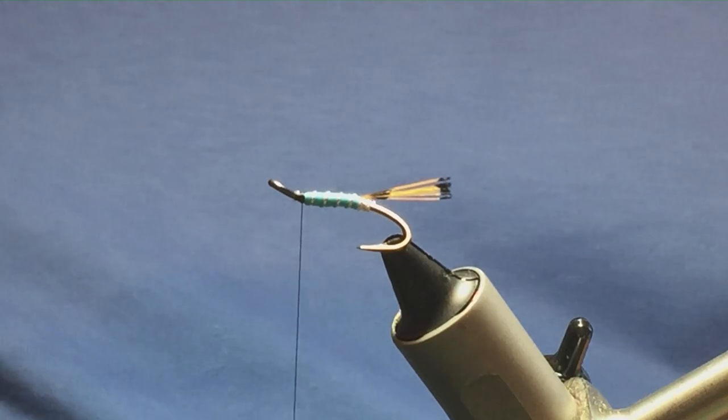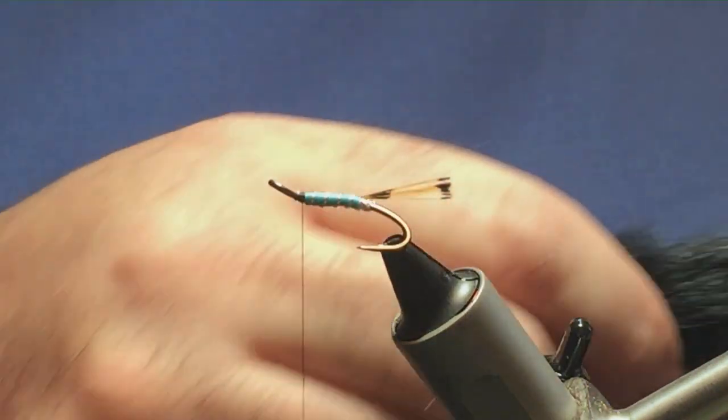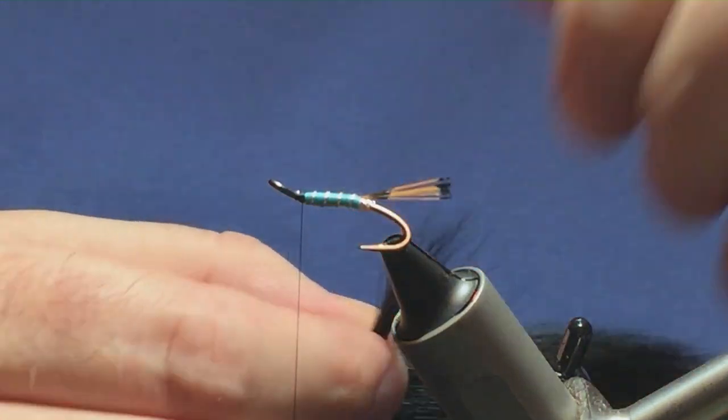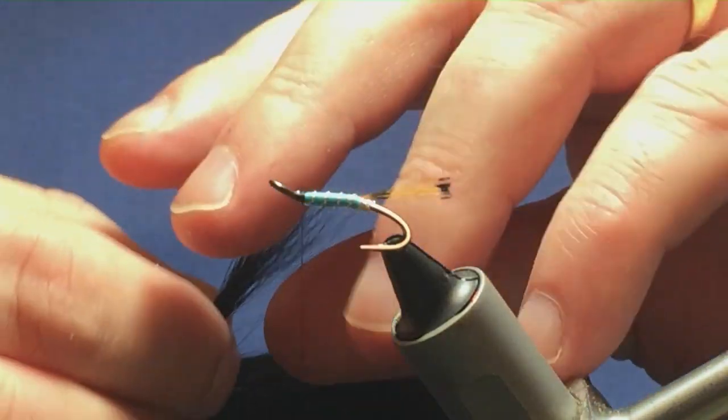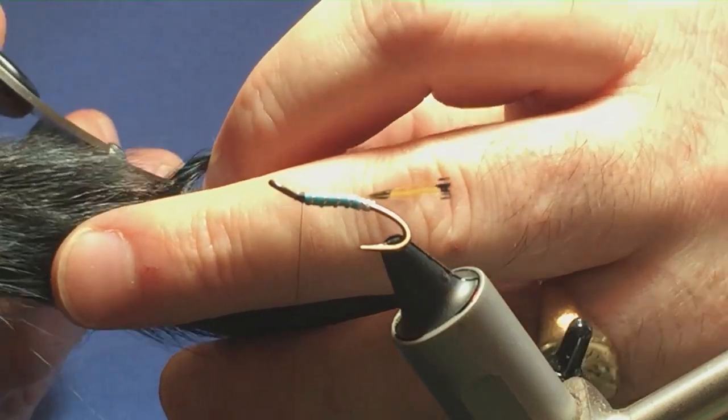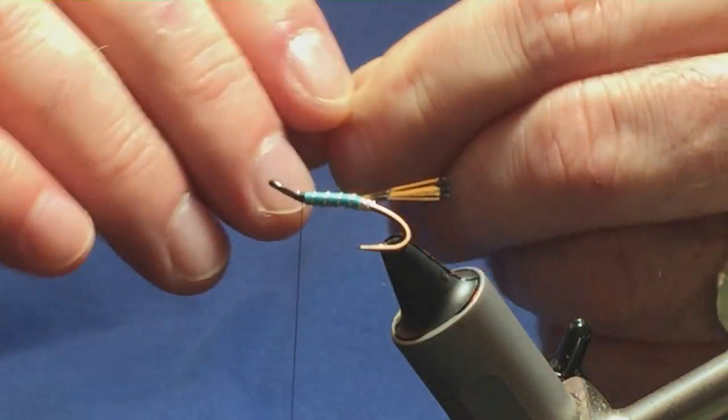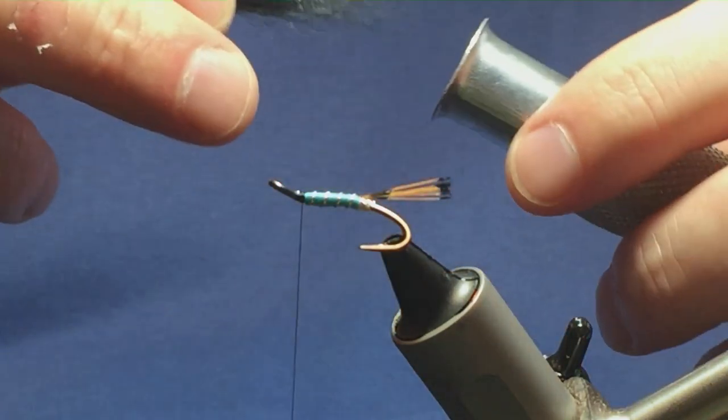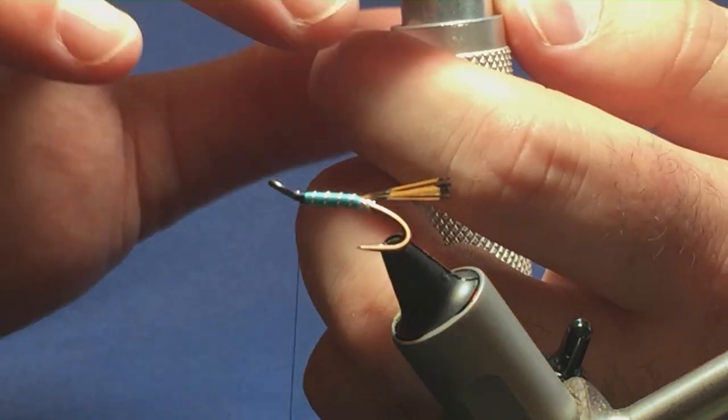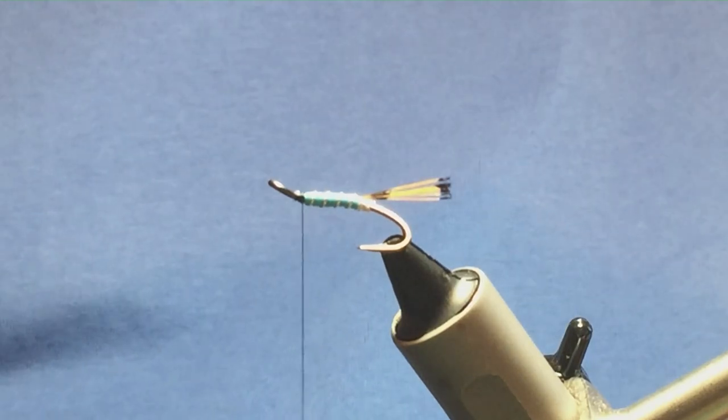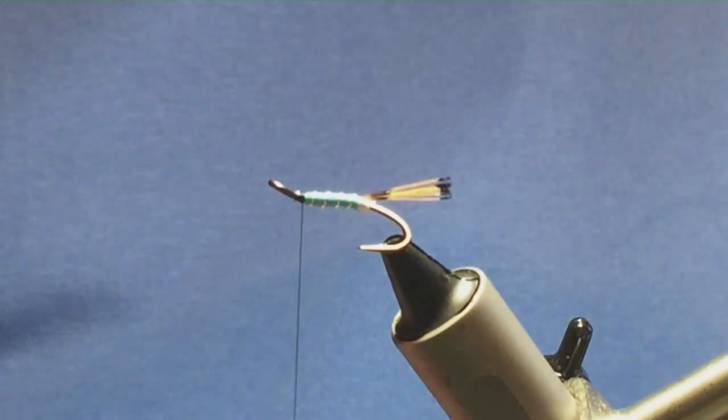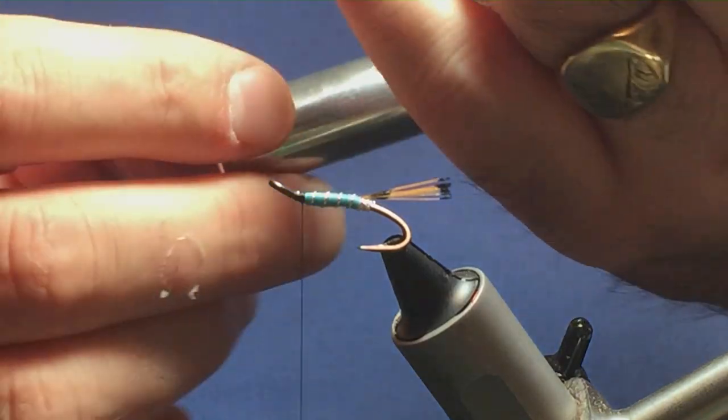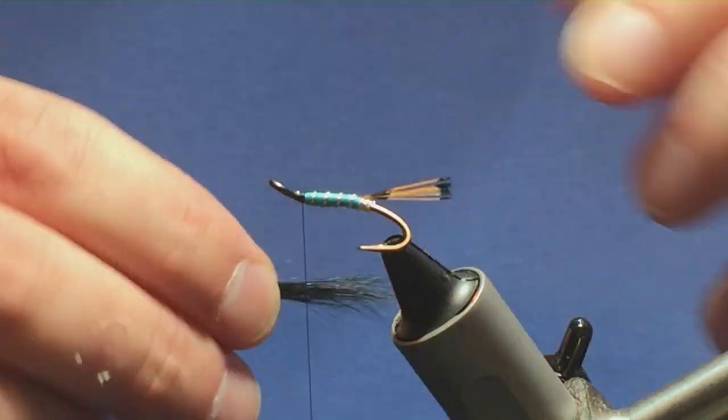Now the wing on the fly, it's just grey squirrel tail dyed black. So I'm just going to come in and take a small pinch, just enough to create a wing. It's plenty. Then come in and just trim away the excess. Then I'm just going to clean everything out because I want to stack this. So I'm just going to pop it into the hair stacker, tips first. Give it a rattle on the desk. All the tips have lined up for us. So we can take it out of the hair stacker.